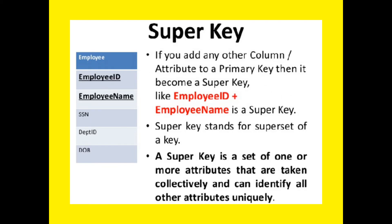Let's understand what is a super key. If we add any other column or attribute to a primary key, it becomes a super key. For example, employee ID plus employee name is a super key. Super key stands for super set of a key. A super key is a set of one or more attributes that, taken collectively, can identify all other attributes uniquely. So in the employee table, employee ID plus employee name is a super key.